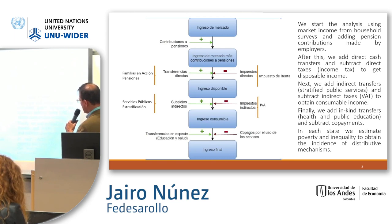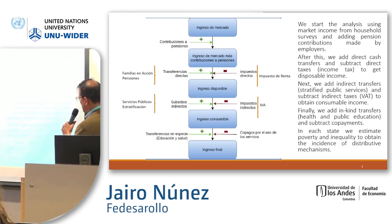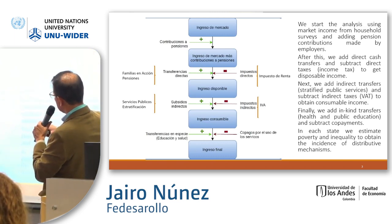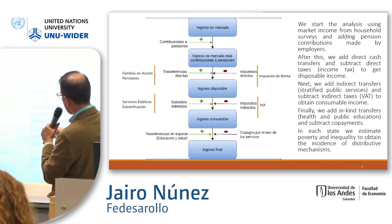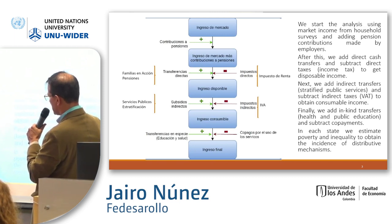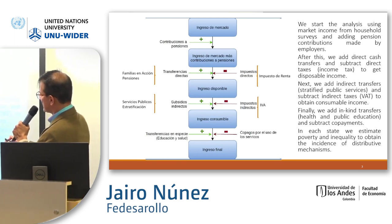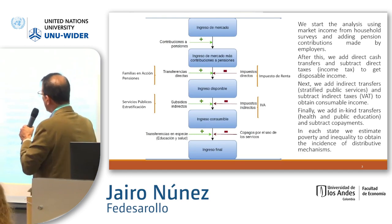Finally, we add in-kind transfers — this is health and public education — and subtract copayments from the use of these services. So at each state — market income, disposable income, consumable income, and final income — we estimate poverty and the Gini coefficient, to see what is working in the distributive mechanisms here in Colombia.